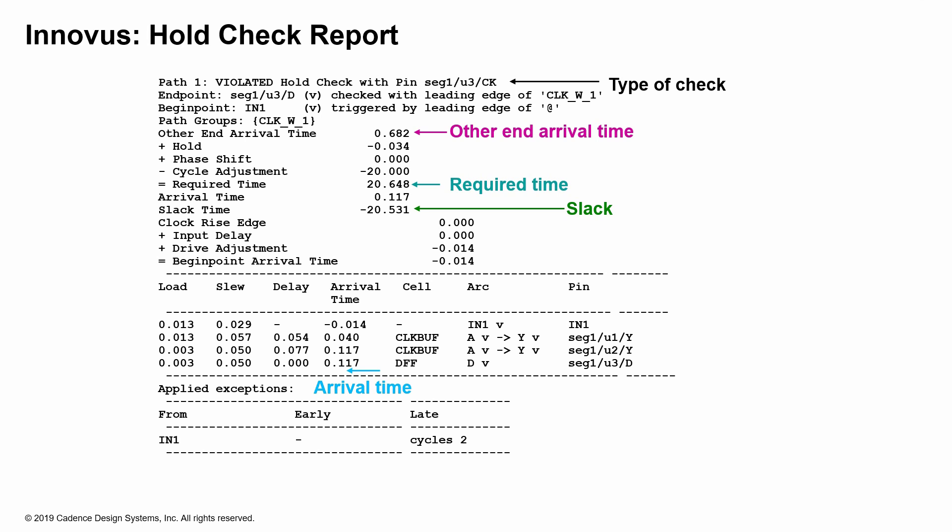You identify problems like these and try to resolve them — for example, checking if the cycle adjustment was correctly set or whether there is a multi-cycle path that was set wrong. You need to analyze all of these situations and make sure the constraints have been properly applied and that the tool is reporting the path correctly.